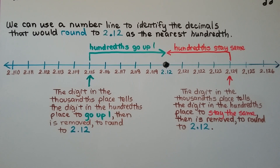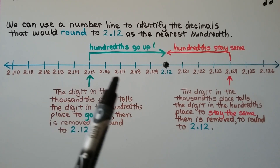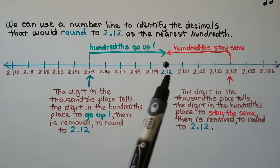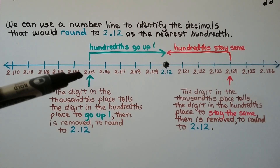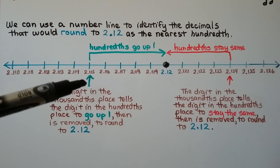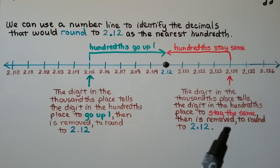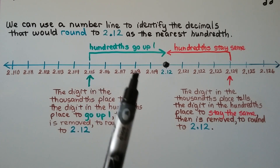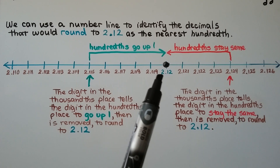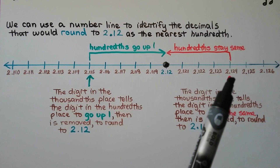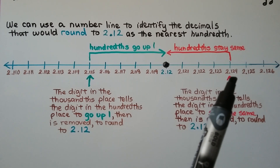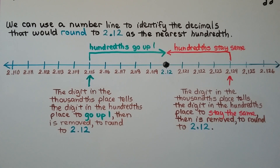We can use a number line to identify the decimals that would round to 2 and 12 hundredths as the nearest hundredth. They're written in thousandths. The digit in the thousandths place tells the digit in the hundredths place to go up one and is removed, rounding up to 2 and 12 hundredths. With a 4 in the thousandths place, the digit tells the hundredths to stay the same and is removed, rounding to 2 and 12 hundredths. So digits with a 5, 6, 7, 8, or 9 in the thousandths place will round up to 2 and 12 hundredths, and digits with a 1, 2, 3, or 4 tell the hundredths to stay the same as 2 and 12 hundredths.